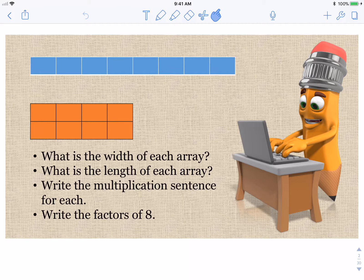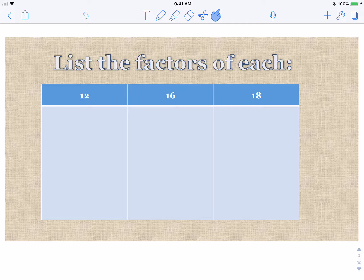I can use division and associative property to test for factors and observe patterns. What is the width of each array? What is the length of each array? Write the multiplication sentence for each and then write the factors of eight. Now if you remember, factors are the numbers that go into eight. So what times what equals eight. List all the factors. Go ahead and pause and do that now.